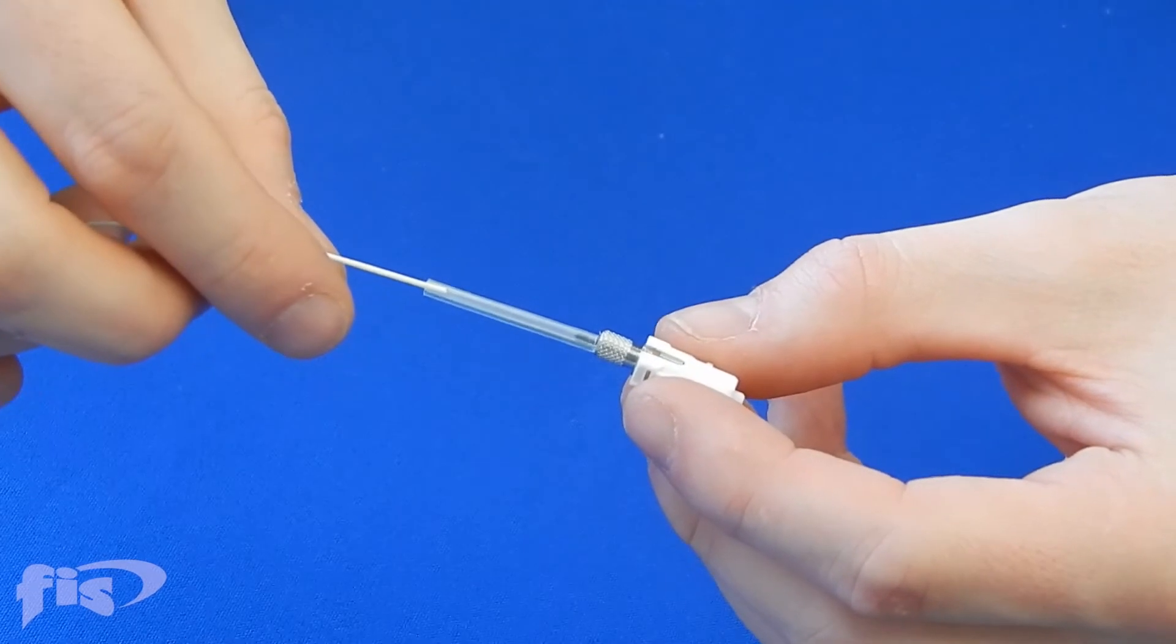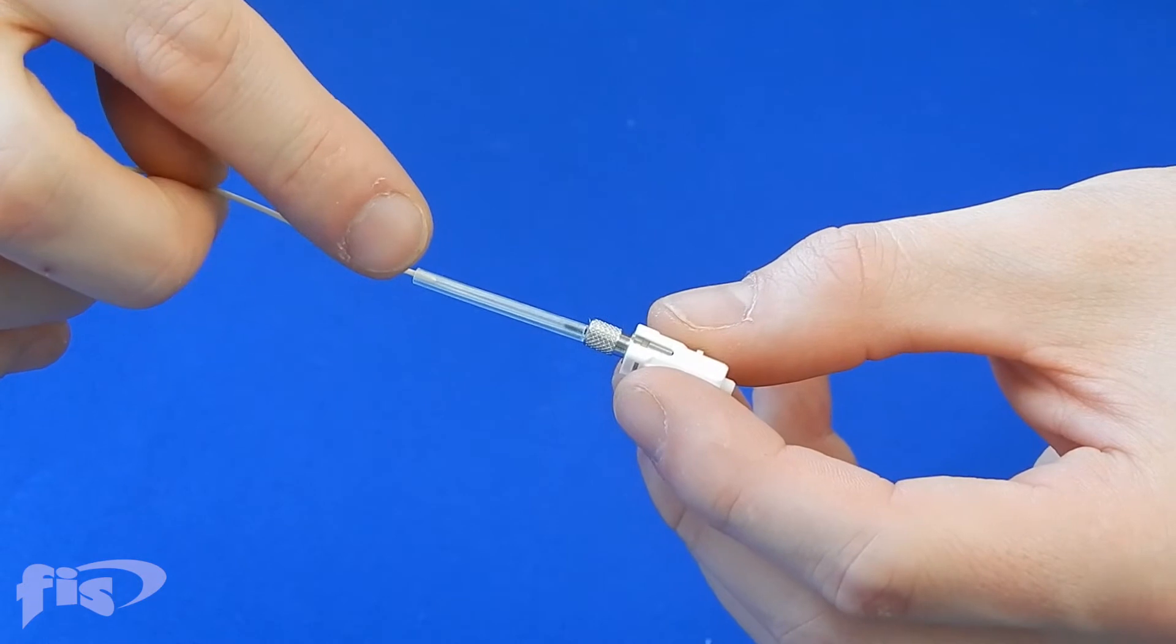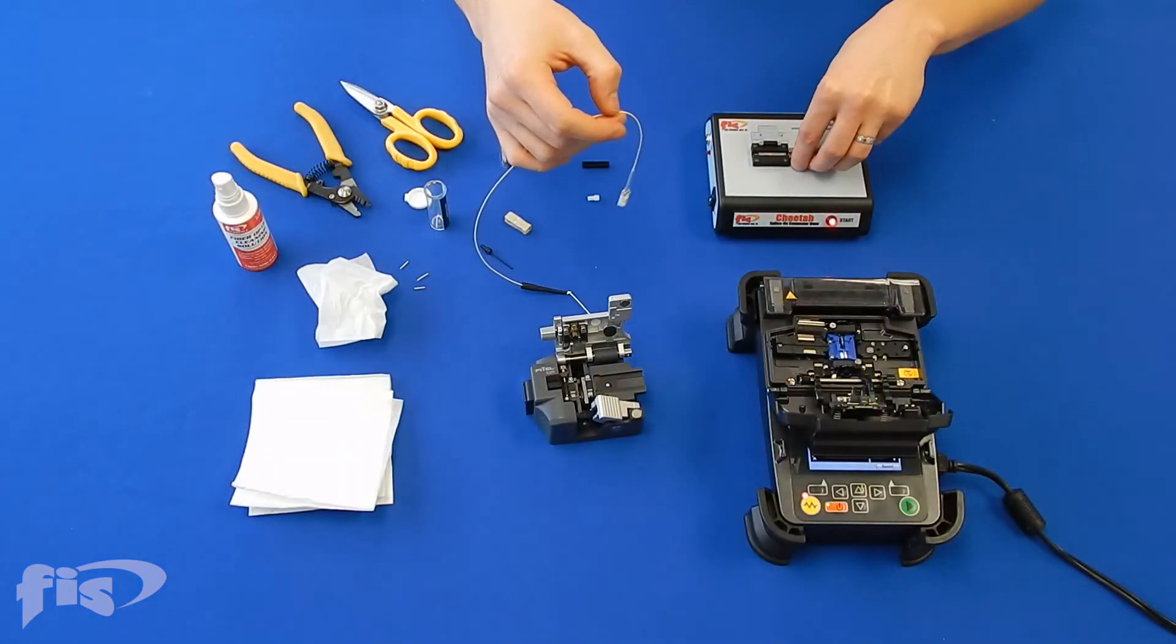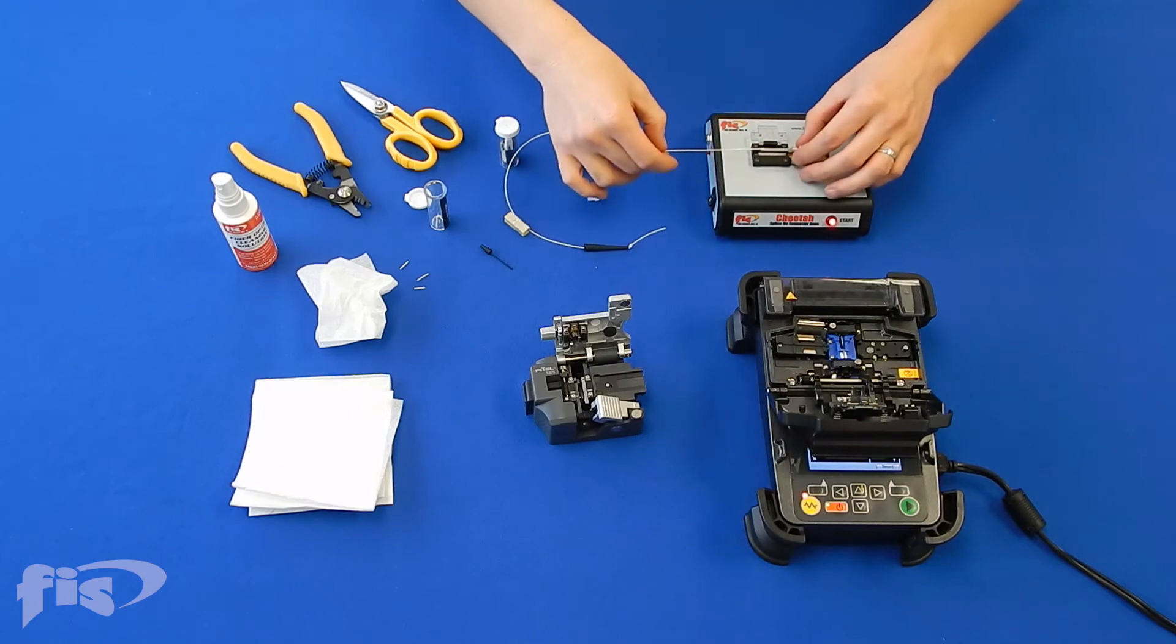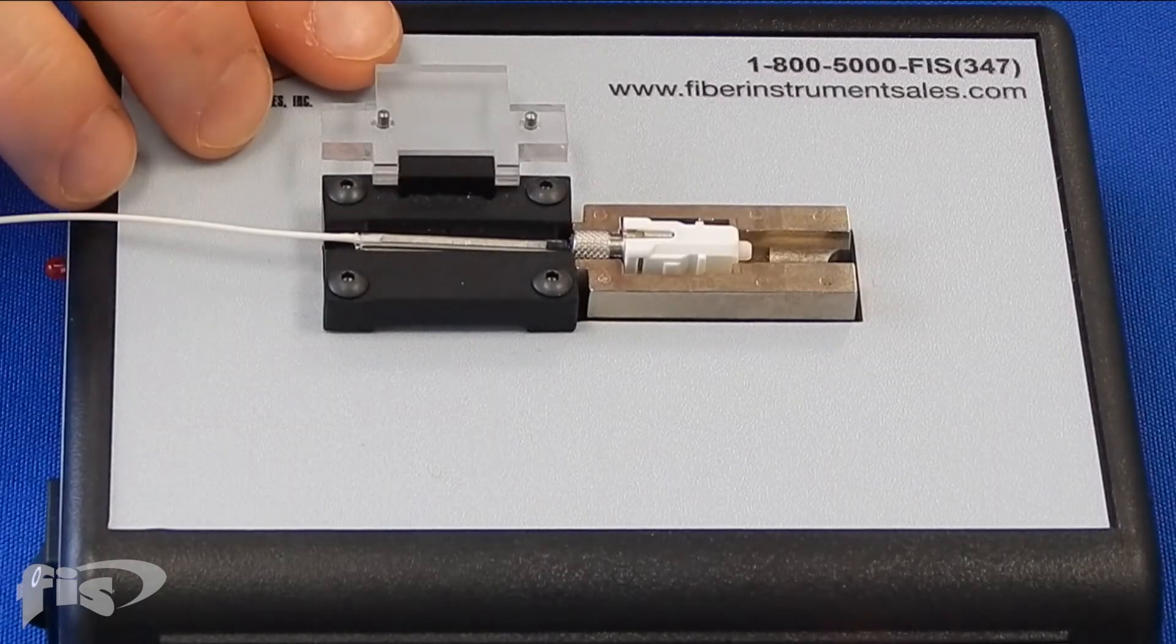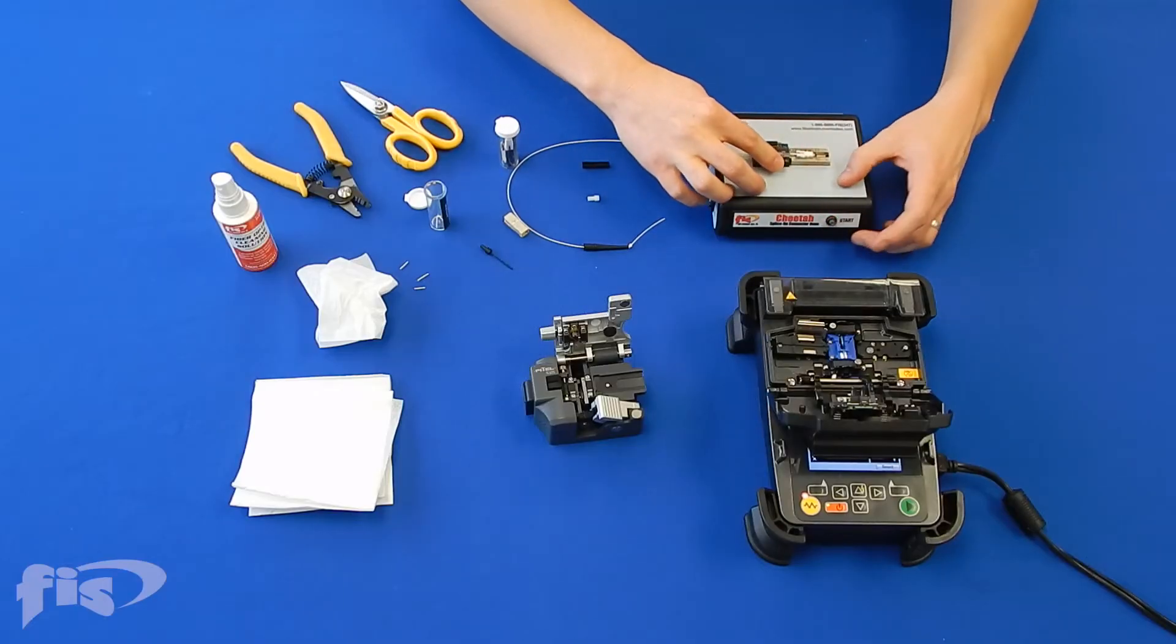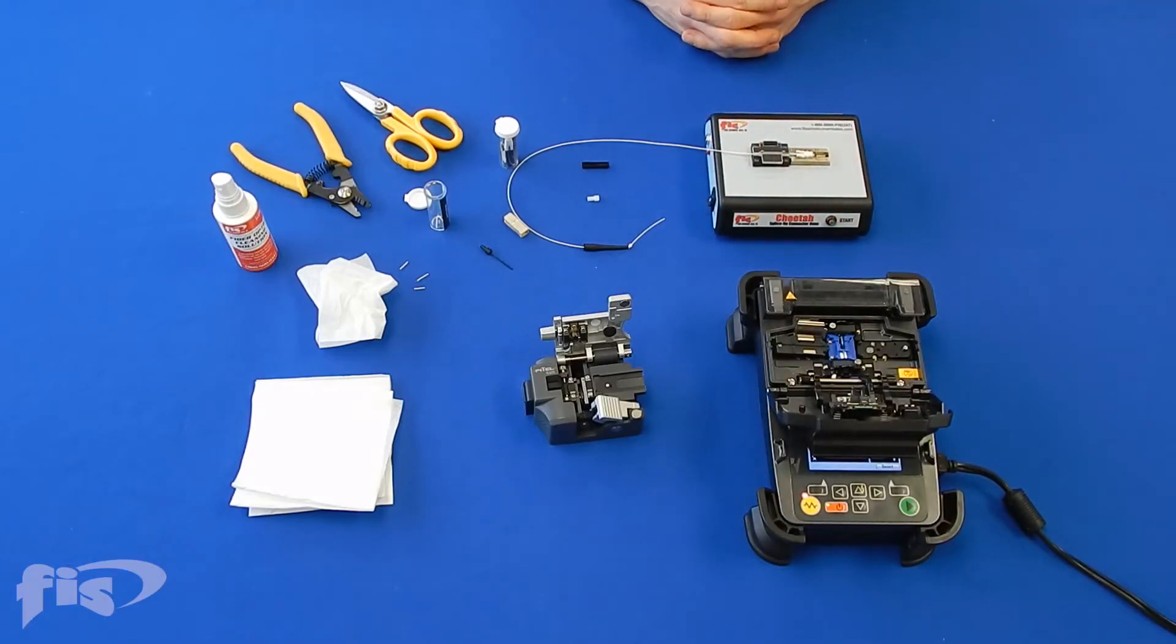Before shrinking, the sleeve should sit as shown. Set the connector holder onto the heat shrink oven and set connector and splice sleeve as shown. Start the heat cycle on the oven and the start button will begin to blink.